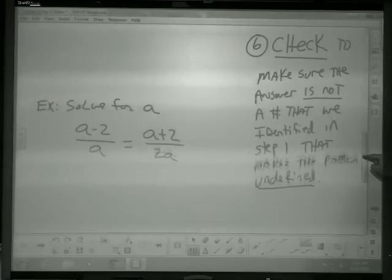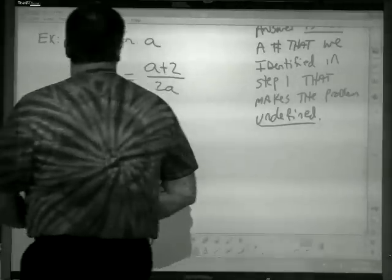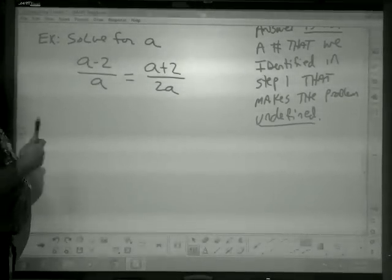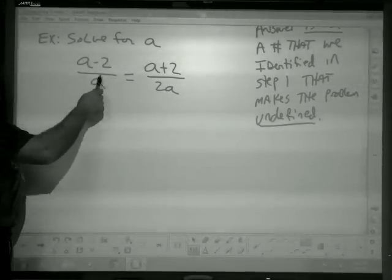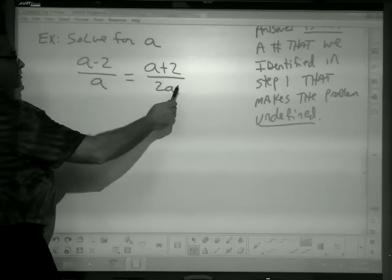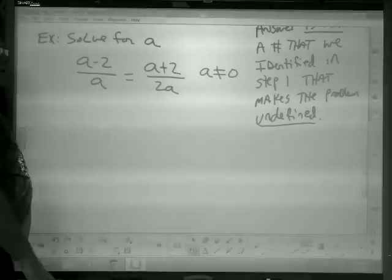Let's take a look at another problem. So let's look at solve for a. So as I look at this, I first say to myself, what would make this 0? Well, if a was 0, this would be 0. If a was 0, this would be 0. So I've got to make sure that a cannot equal 0. That's step 1.